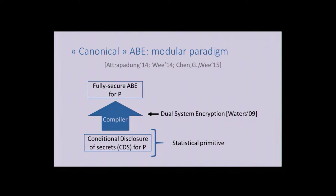What do I mean by canonical? Canonical ABE is obtained via a generic compiler—not our work—that takes a statistical primitive called conditional disclosure of secrets, or CDS, which depends on predicate P. Think of it as something simple, similar to secret sharing. You compile this into a fully secure ABE using a generic compiler that does not depend on P—using, for those who know, dual system encryption introduced by Waters.